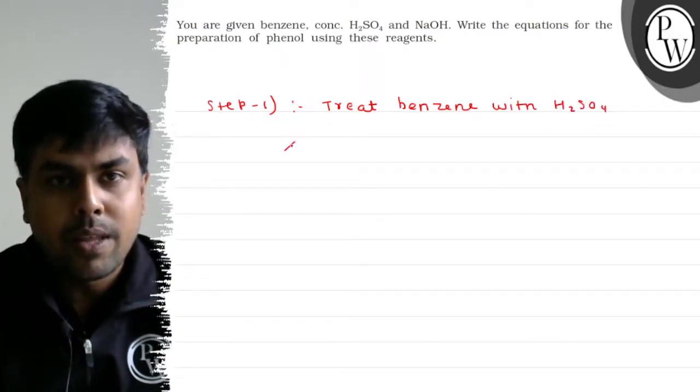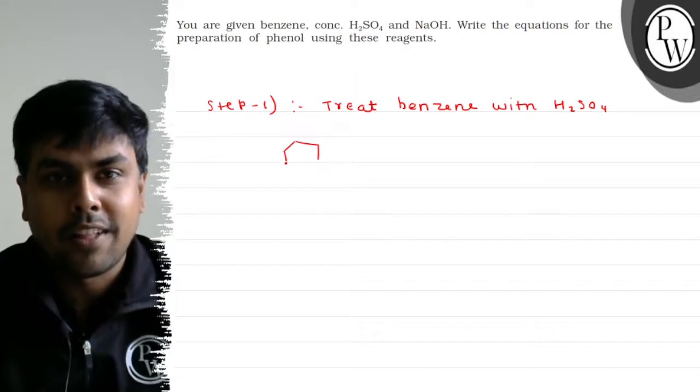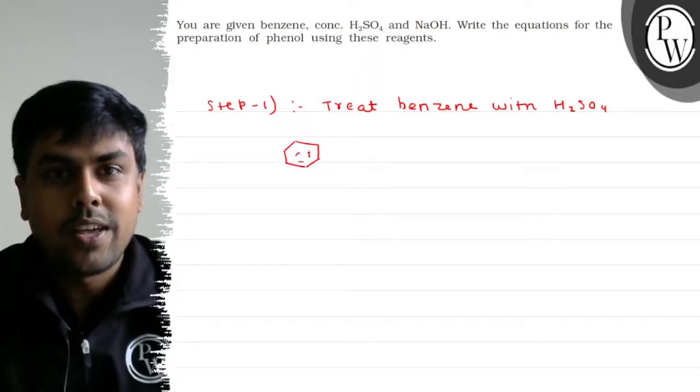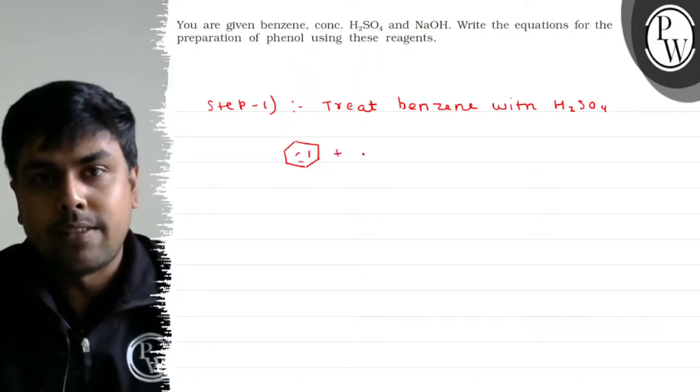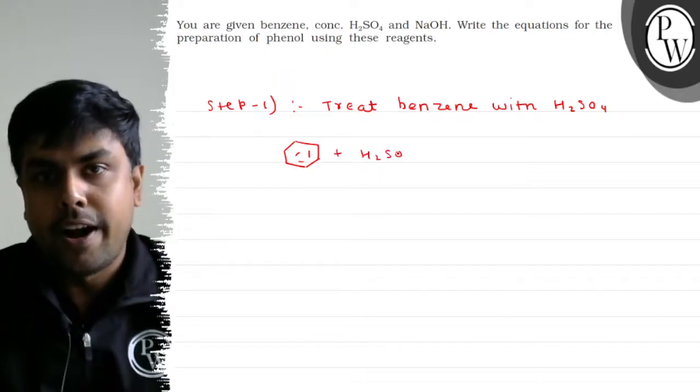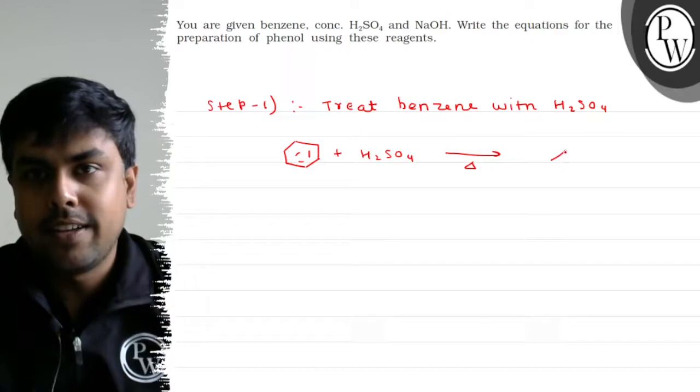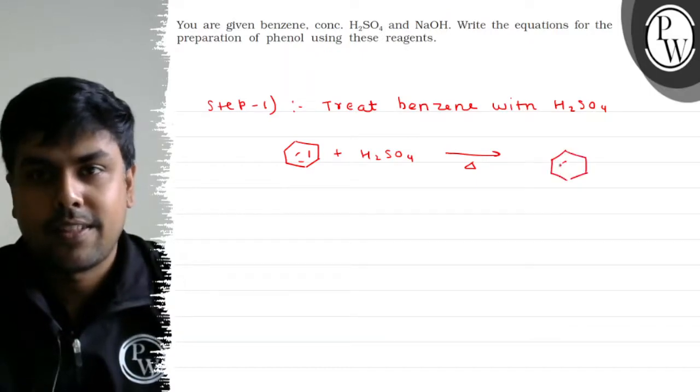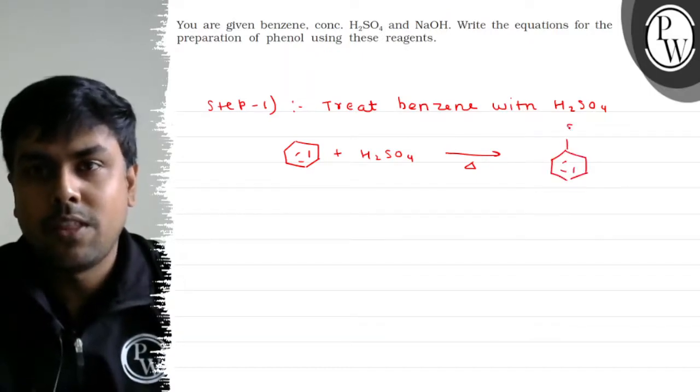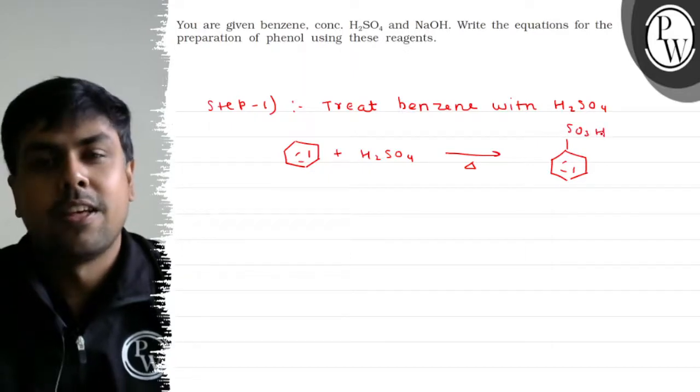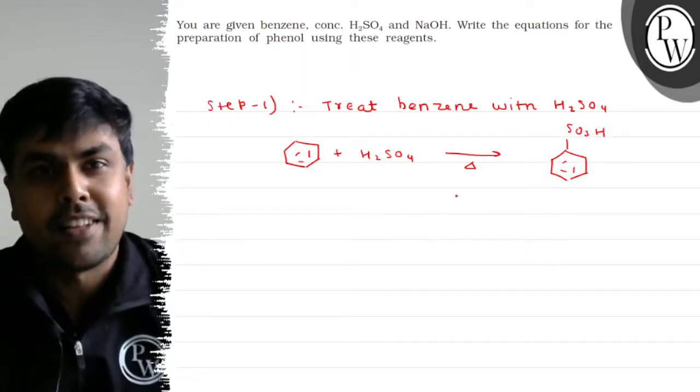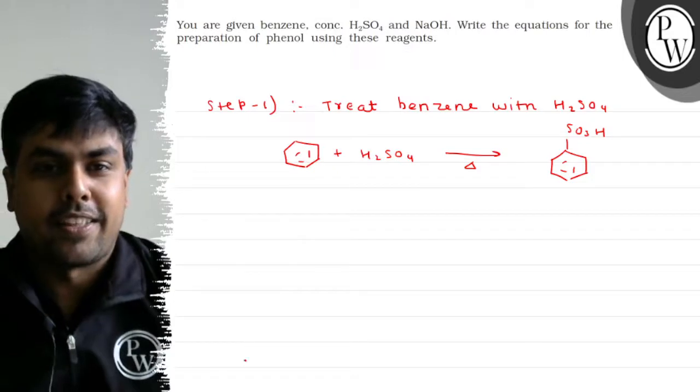This is a sulfonation reaction. Benzene plus H2SO4 heated strongly gives benzene sulfonic acid (C6H5SO3H). In step 2, let's see what we can do.